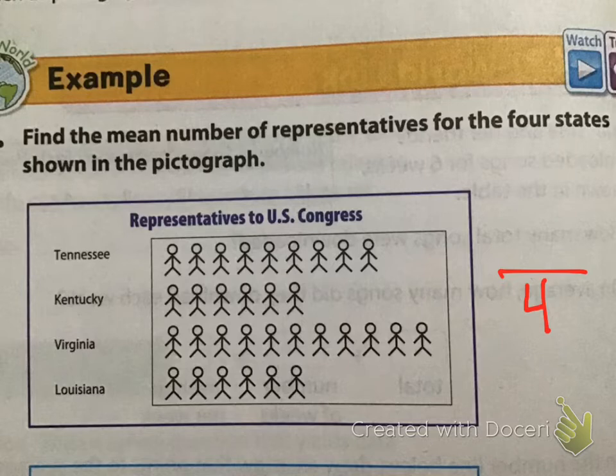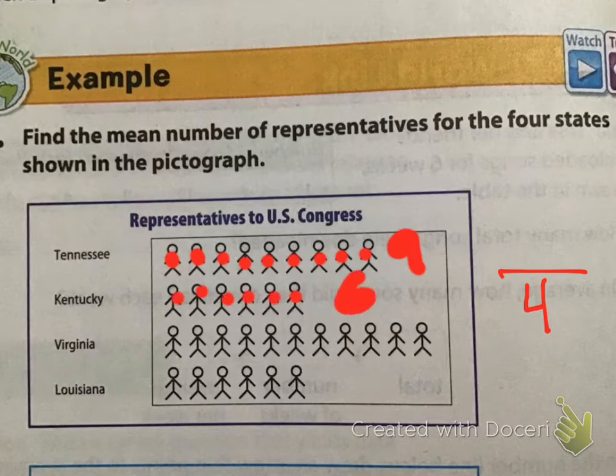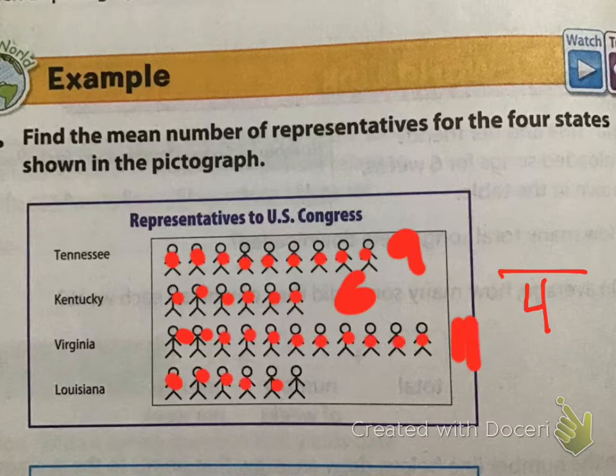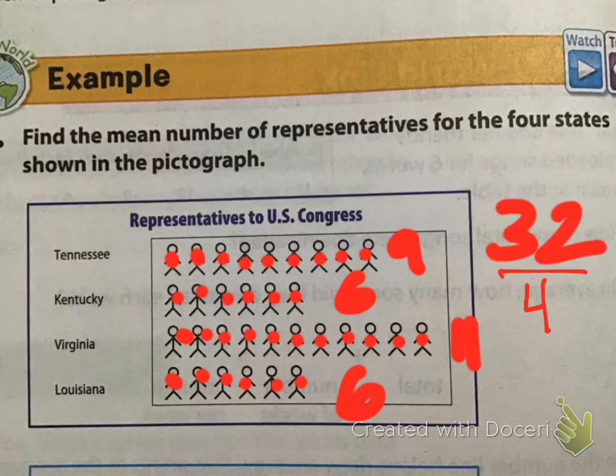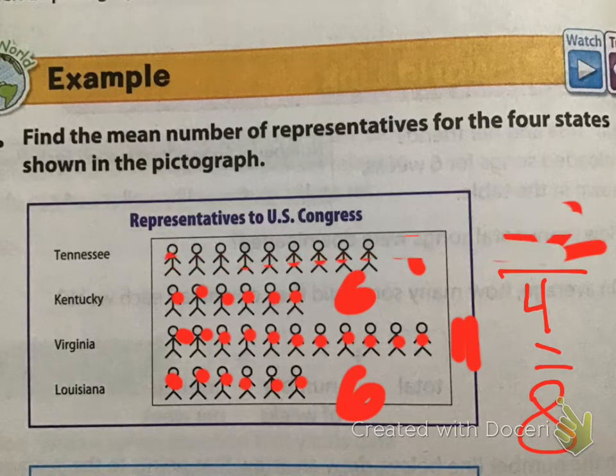In this case, we have nine representatives for one state, six for another, eleven for the third, and six for the fourth. So, if we add all of those up, what we get is 32. Then we divide 32 by 4. And for our answer, we get 8. So, on average, each state has 8 representatives.